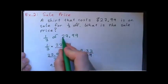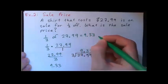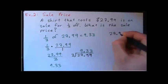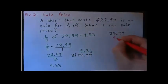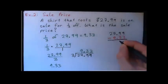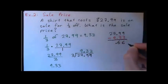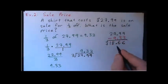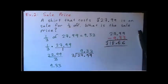So what we found is one third of twenty-seven ninety-nine is nine dollars thirty-three. But that's not the answer to the question — we found what a third of the price is, but it's on sale for a third off. So we have to take the twenty-seven ninety-nine and subtract the nine thirty-three. Nine minus three is six, nine minus three is six, nine minus three is six, decimal point underneath each other. Twenty-seven minus nine is eighteen. So if I take the third off, I end up with eighteen dollars and sixty-six cents. That is the final answer.